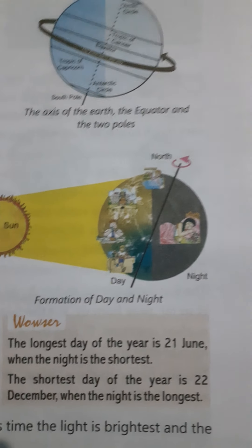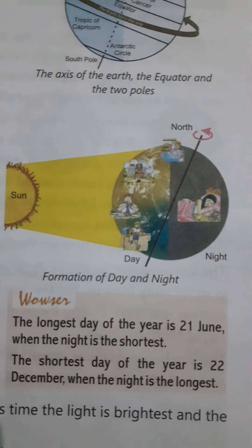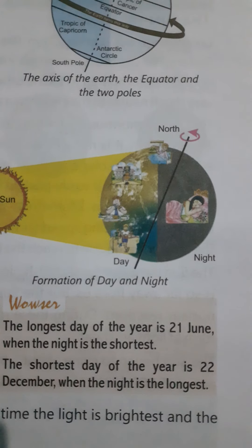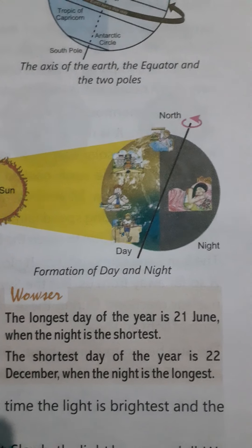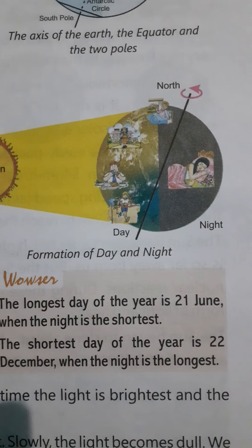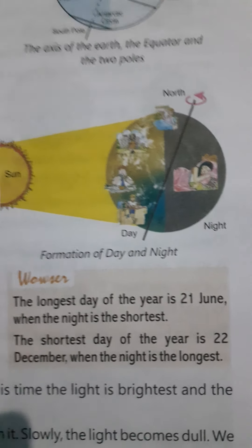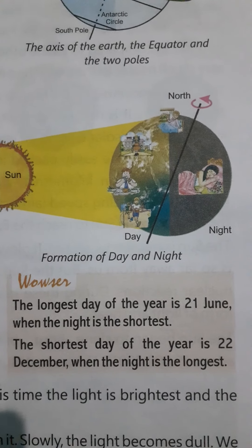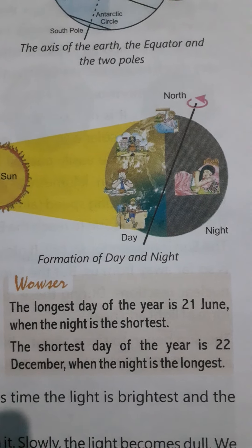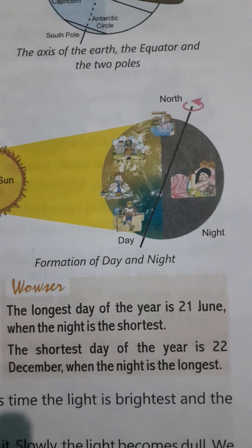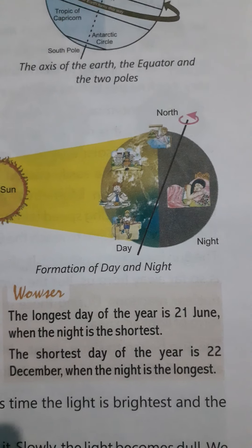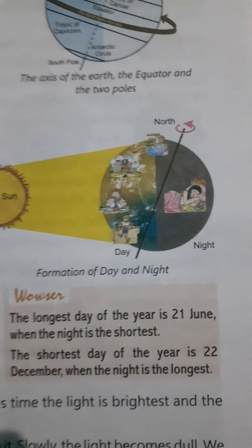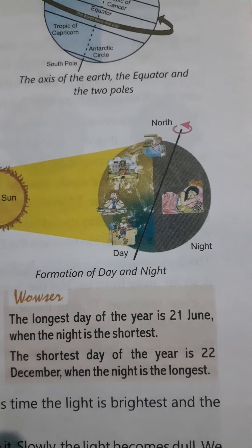The longest day of the year — that is 21st June. On 21st June we will have the longest day and the shortest night. The shortest day of the year is 22nd December. On 22nd December we will have the shortest day, meaning the longest night. We can feel this on 22nd December.